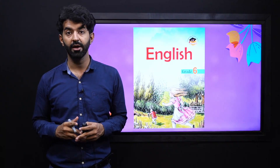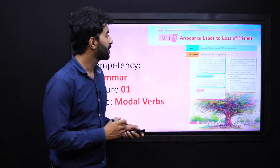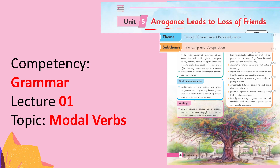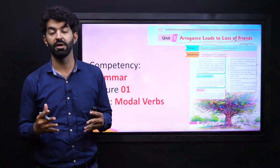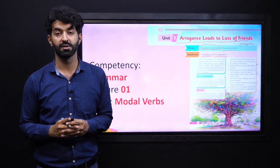My dear learners, we are on unit number 5 and the title is 'Arrogance Leads to Loss of Friends.' In this lesson, we address the theme about peaceful coexistence and peace education, and our sub-theme is on friendship and cooperation. The whole lesson is made up of this theme and sub-theme.